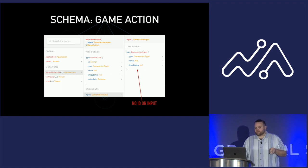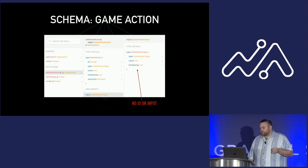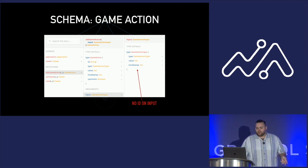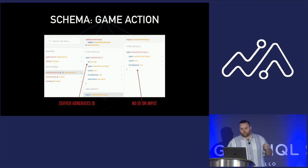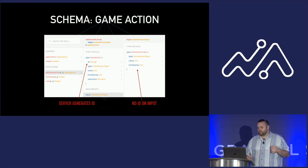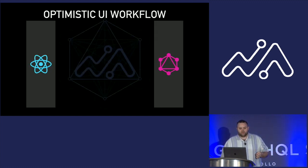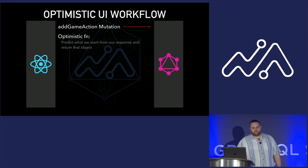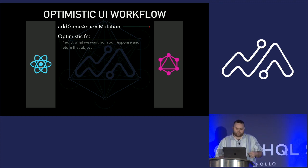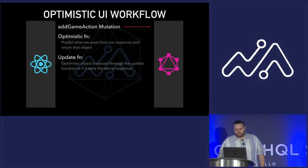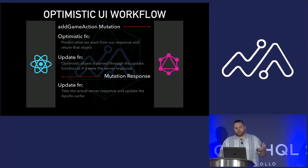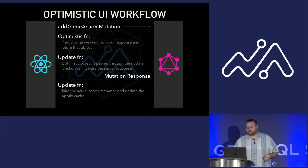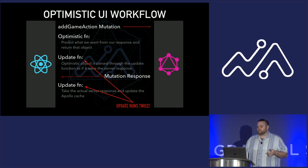Looking at our mutation — this is the add game action mutation. When we kick a touchdown, we send off our mutation with only the value, the timestamp, and the type. We are not going to be returning an ID because that's server generated, so we won't know our ID when we send off our original mutation. It's important because Apollo Cache uses ID to determine what object is where. The optimistic function is called first and we predict what we want to see from our response and return that object. That object is pumped into the update function, and when the mutation responds, the update function is called again with the actual server response. It's important to note that the update function runs twice with both objects, so sometimes you end up with duplicates that you need to watch for.